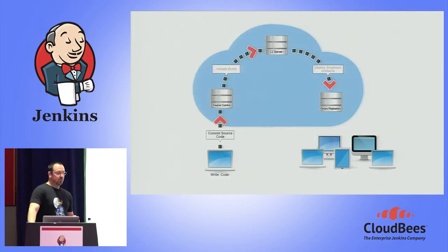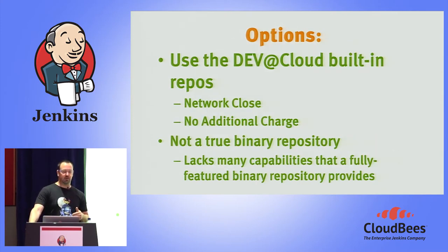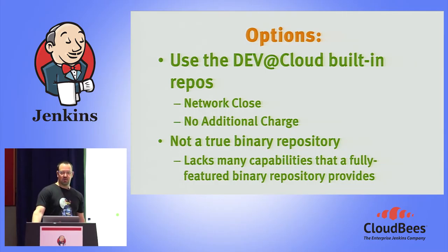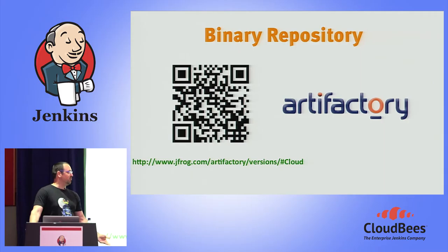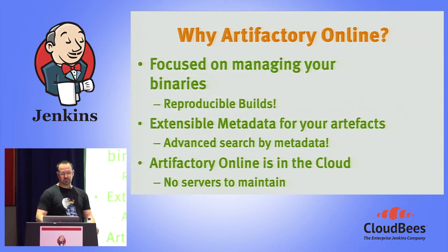Once we've built our software, we have binaries that we need to store somewhere. There is support for binary repositories in DevAt Cloud, which I believe is some sort of wrapper around the file system. While it may suffice for very basic needs, it's not a full-featured binary repository — it lacks many capabilities that a modern binary repository management tool needs. What I'm going to recommend here is the JFrog tool Artifactory, which is a dedicated, focused binary repository. We have an online version provided as a service, and we also give it away for open source projects.